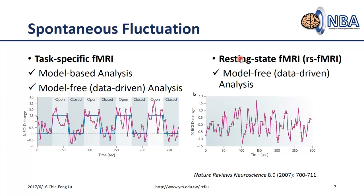However, when we come to resting state fMRI — sometimes called RS-fMRI — you have no task model. All you can do is find a model-free approach to analyze your data and identify brain activity. The BOLD signal during resting state shows spontaneous fluctuations with no model to correlate with. So what you can do is find the similarity not between BOLD signals and task design, but the similarity between brain regions — how different brain regions collaborate during resting state.